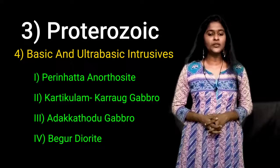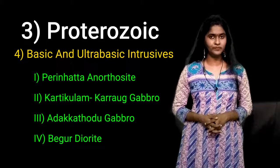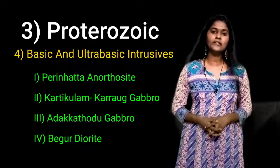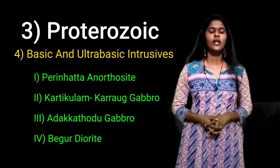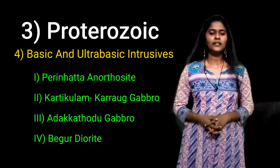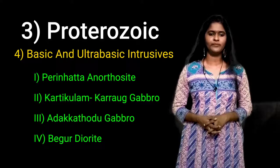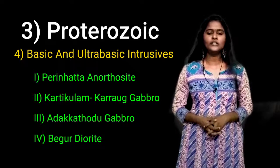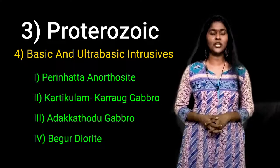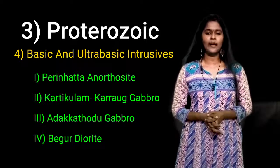The anorthosite has a very irregular border and tongue-like projection into the country rock of charnockite and pyroxene granulite. The Peringala Anorthosite is assigned a Proterozoic age. The second category of basic and ultrabasic intrusives is Kattikulam and Karavallur gabbro. The two gabbro plutons namely Kattikulam gabbro and Karavallur gabbro are located in the northeast of Mananthavady. Gabbro at Kattikulam occupies an area of 45 square kilometers with an elliptical shape.